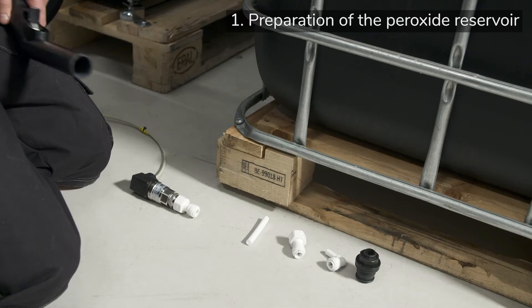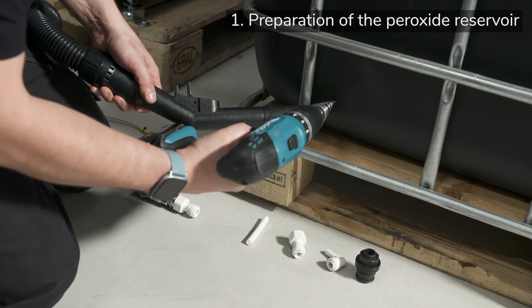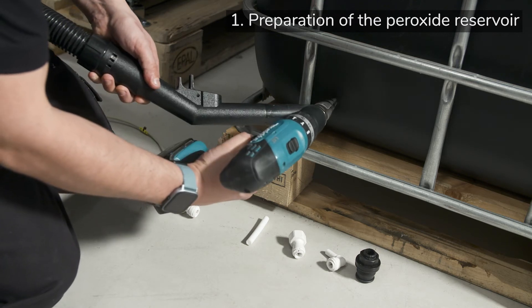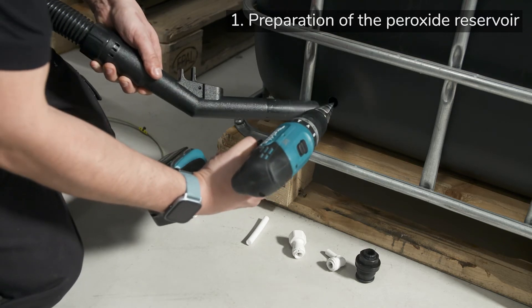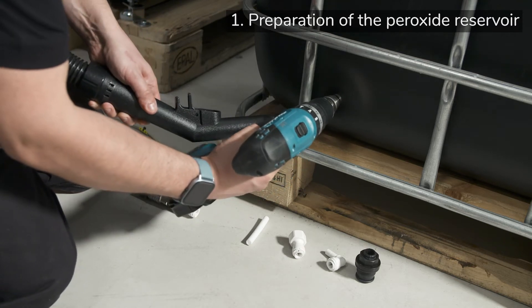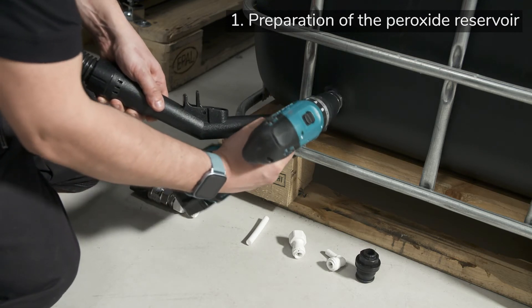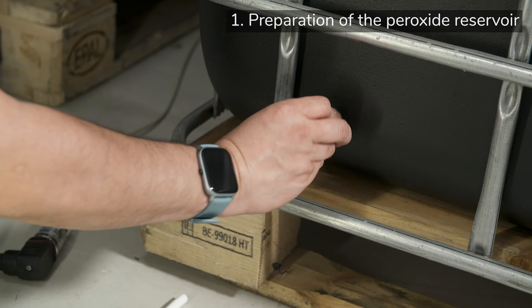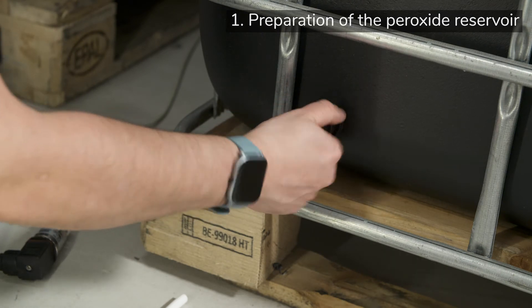Step 3. For measuring the level of peroxide solution in the reservoir, we install a pressure sensor on the side wall as close as possible to the bottom of the reservoir. First, drill a hole with diameter 30mm, again making sure not to get plastic residue into the reservoir. Here, we must use a special bulkhead fitting, as shown, which can be screwed in from the outside.